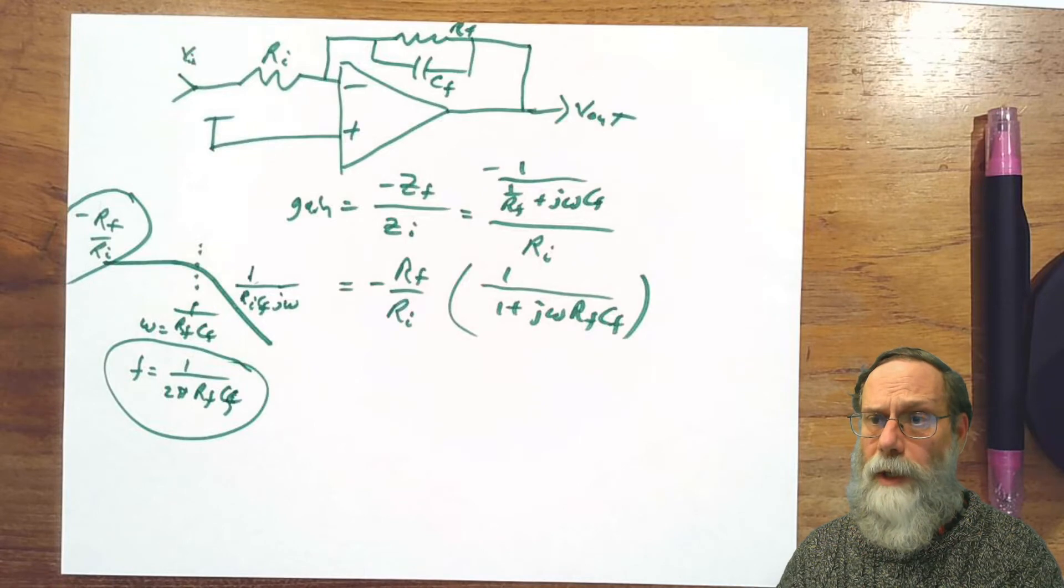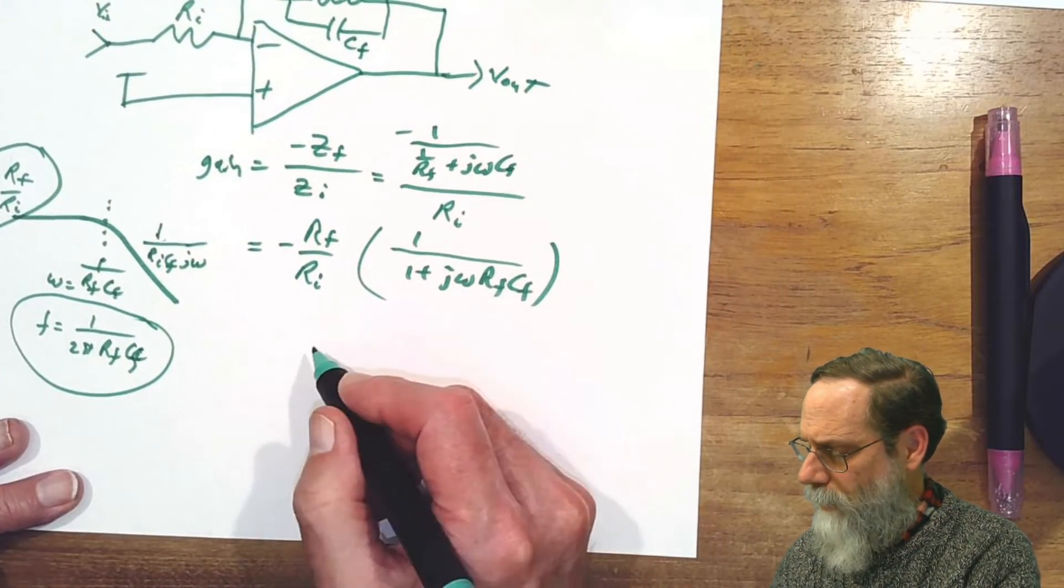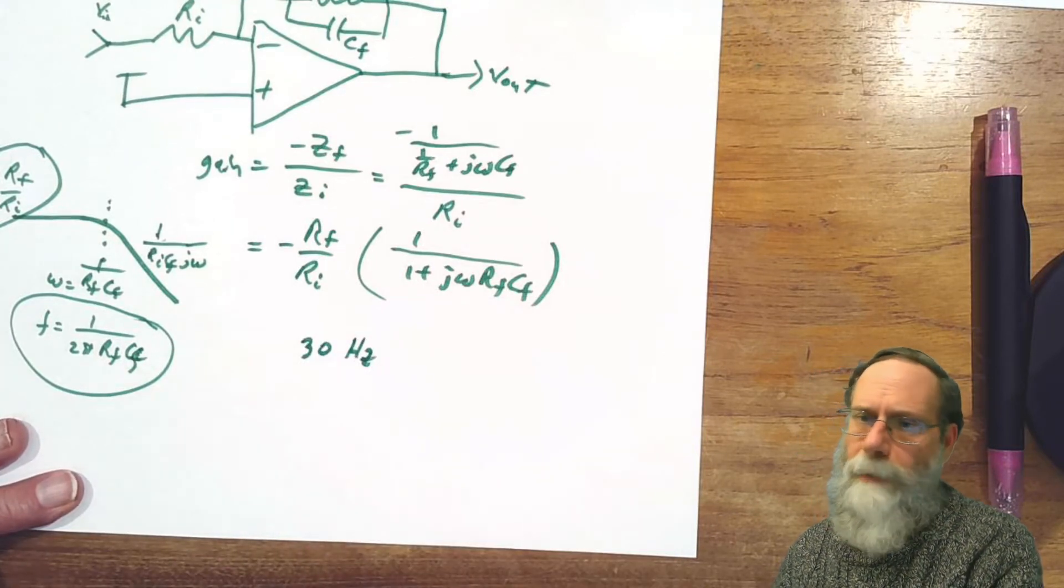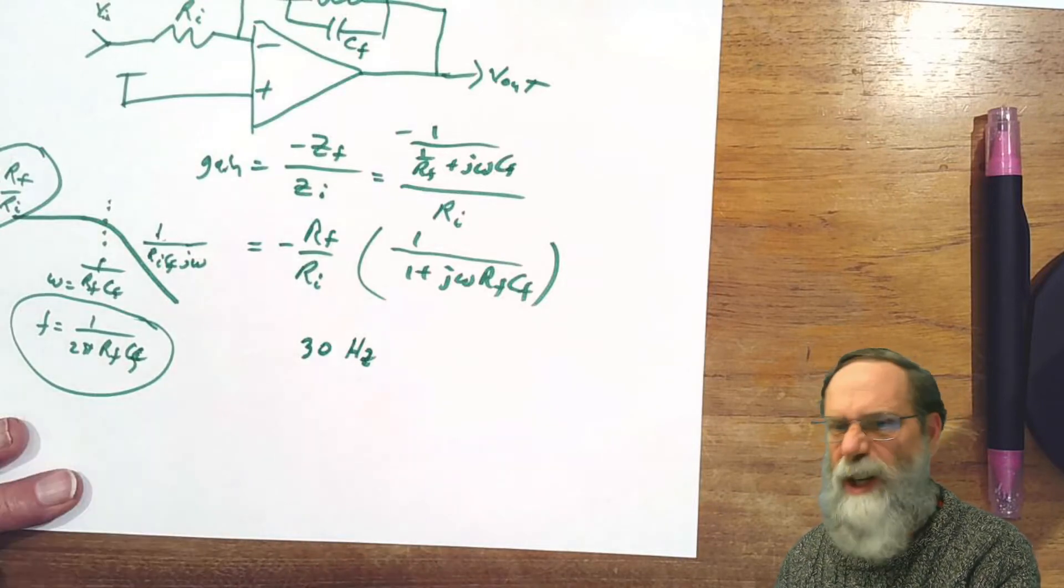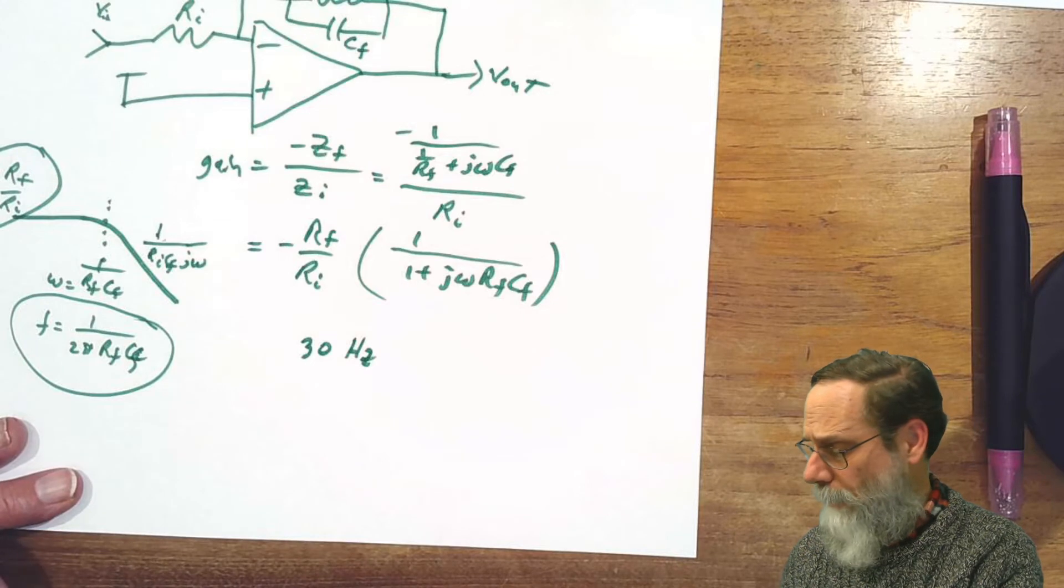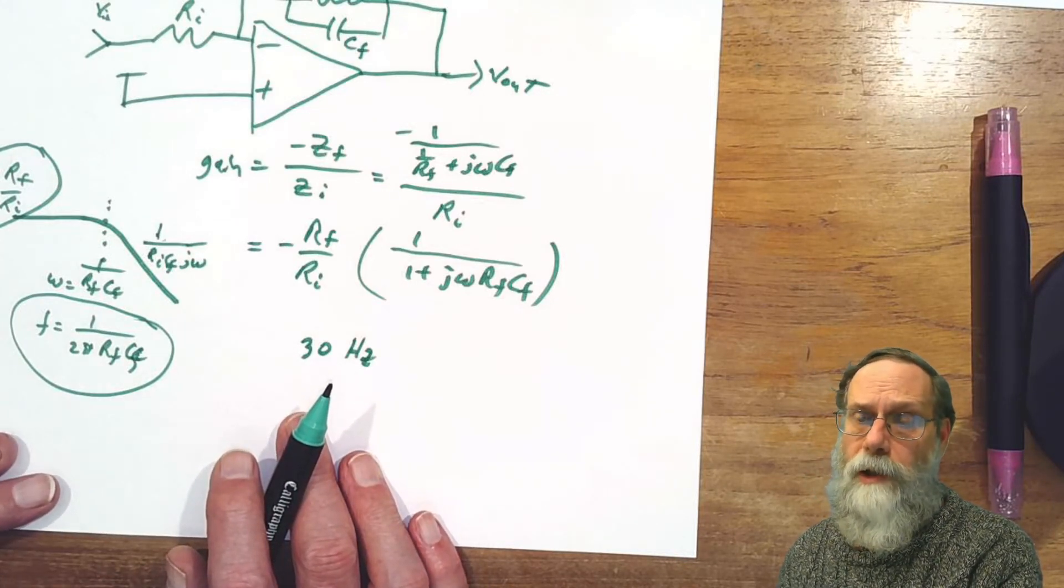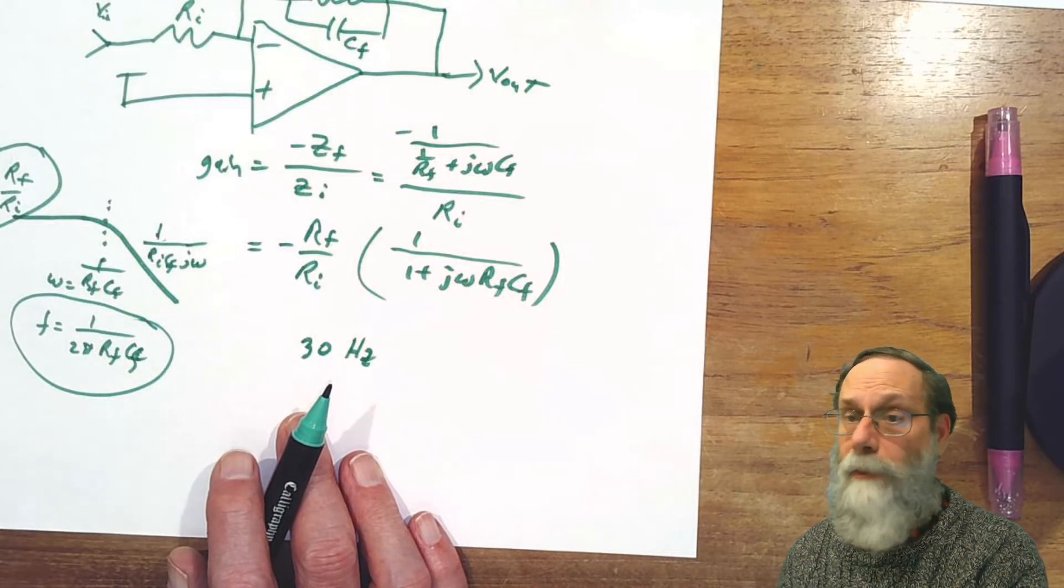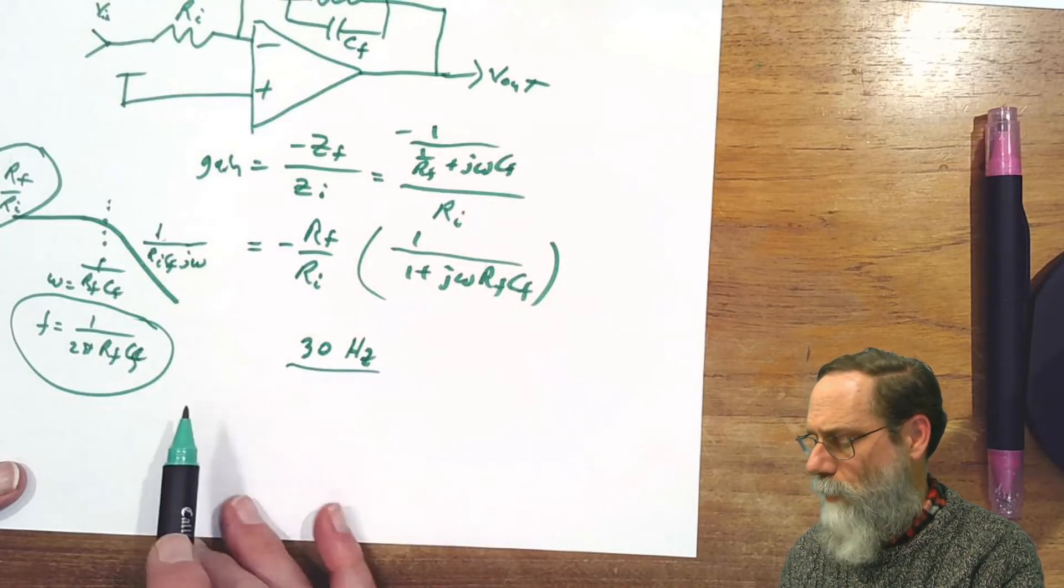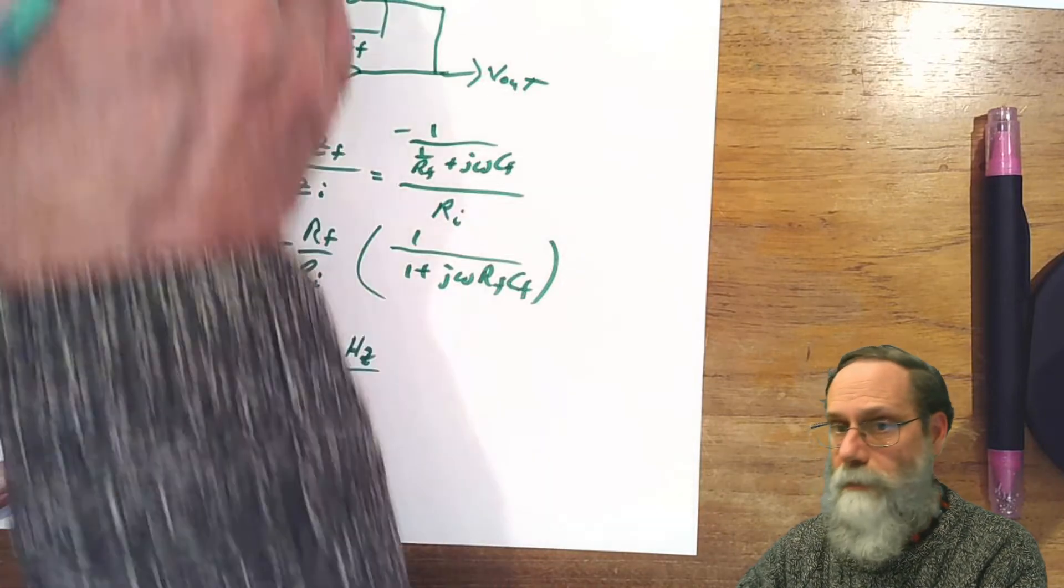Let's actually design one now. Say we want 30 Hz as our corner frequency, and let's say we want a passband gain somewhere in the hundreds. We don't have to worry about a large gain in the passband causing us trouble with gain bandwidth product, because we're not getting up to high frequencies with that large gain. So how do we get 30 Hz? We need to make the Rf Cf time constant be appropriate for 30 Hz.